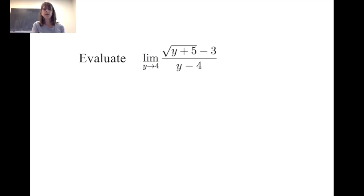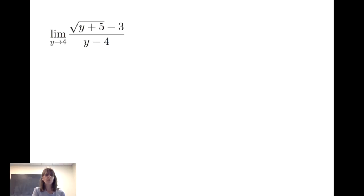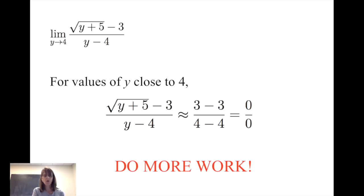Pause the video and try to evaluate this limit on your own. When we consider this limit, for y values close to four, the square root of y plus five is going to be close to the square root of four plus five. So the numerator is close to three minus three and the denominator is close to four minus four, which means we would get zero divided by zero. That's a flag that says we must do more work.